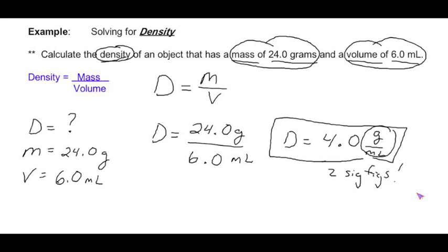And it's always a great idea to box in your answer or circle it and you're done. So again, the density is 4.0 grams per milliliter.